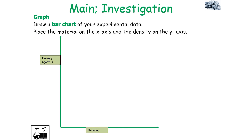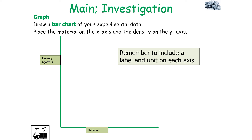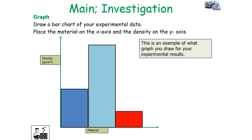You then draw a bar chart of your experimental data, placing the material on the x-axis and the density you've calculated on the y-axis, with axes labelled with units. We draw a bar chart because one of the variables — the material — is a categorical variable.